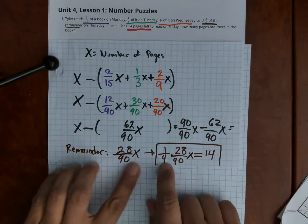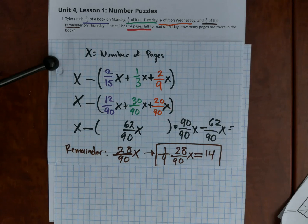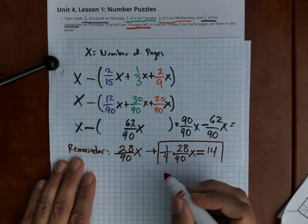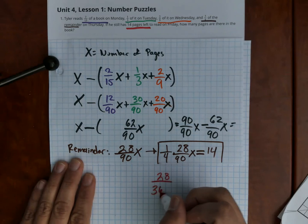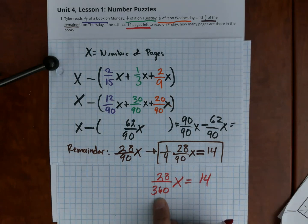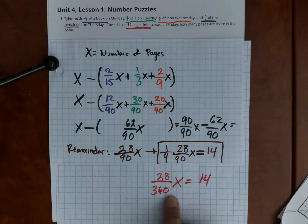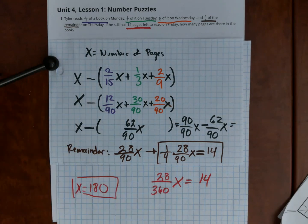This remainder is the part left in the book — one-fourth is what's left, and then I multiply by three-fourths. Multiplying through gives the fraction 28 over 360 times x equals 14. This 28 over 360 is the fraction of the book that's left, so I need to find what number times 28/360 equals 14. Multiplying by the reciprocal, or dividing, we get 180. You can verify: 180 times that fraction gives 14. So the book has 180 pages — that's the full algebraic solution. Thank you, ladies and gentlemen.